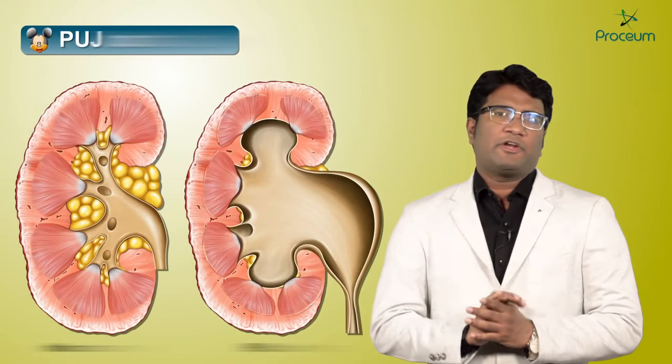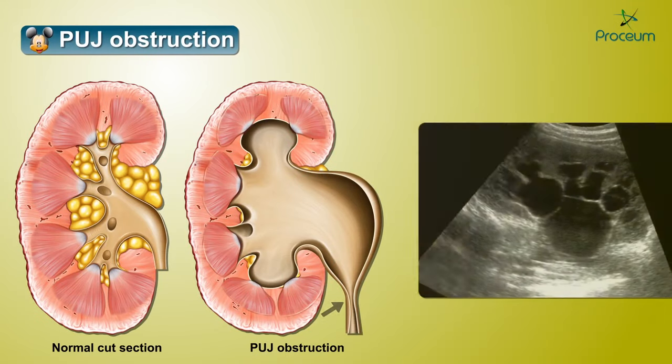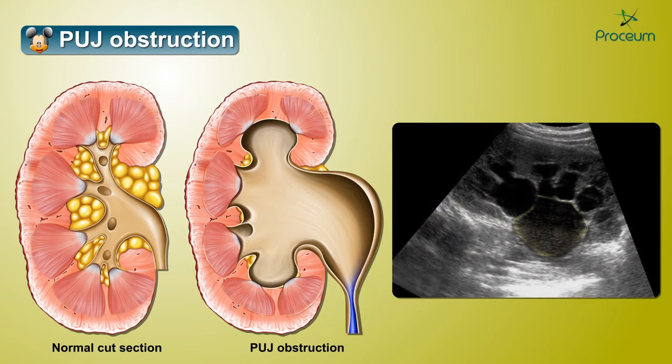There are other sites where you see this Mickey Mouse appearance. In pelviureteric junction obstruction, we will not be able to see the ureter, but the dilated pelvis and the dilated calyces give the appearance of a Mickey Mouse on ultrasound.